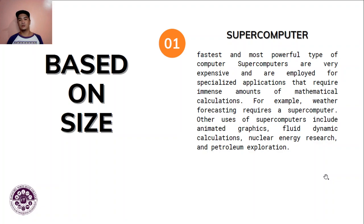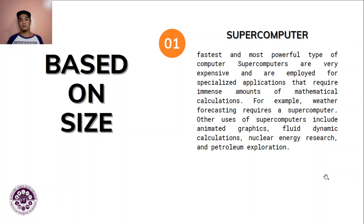Now based on size, the first type is the supercomputer — the fastest and most powerful type of computer. Supercomputers are very expensive and are employed for specialized applications that require an immense amount of mathematical calculations. Examples include weather forecasting, animated graphics, fluid dynamic calculations, nuclear energy research, and petroleum exploration.